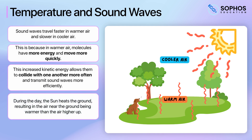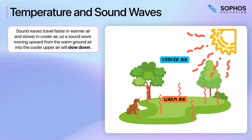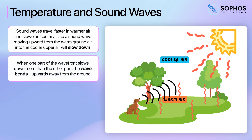During the day, the sun heats the ground, which in turn warms the air close to the surface. This creates a situation where the air near the ground is warmer than the air higher up. Since sound waves travel faster in warmer air and slower in cooler air, a sound wave moving upward from the warm ground air into the cooler upper air will slow down. When one part of the wave front slows down more than the other part, the wave bends. In this case, the sound wave bends upwards away from the ground.